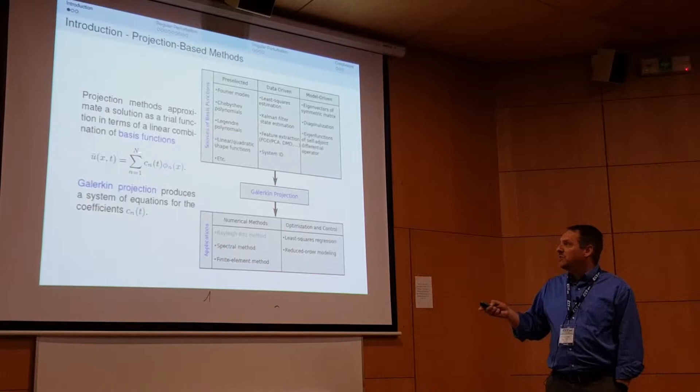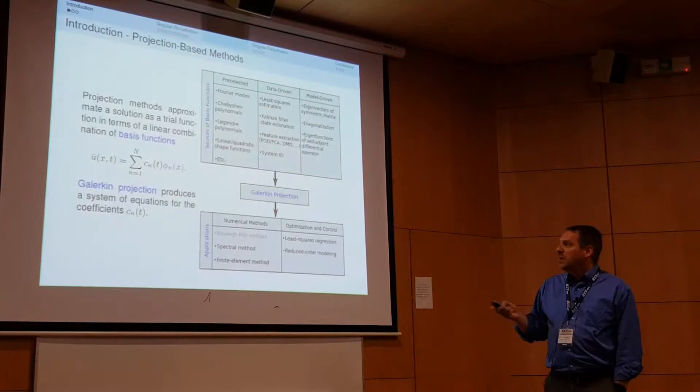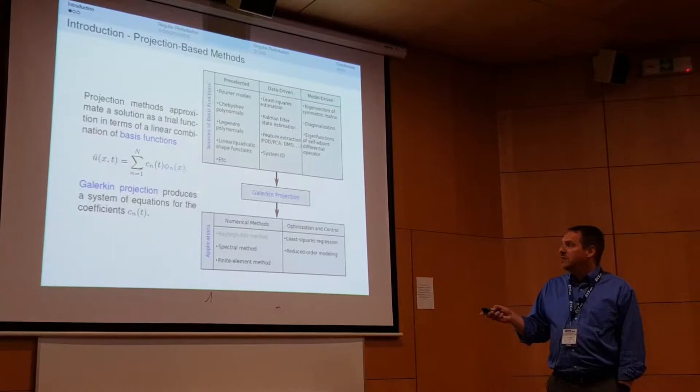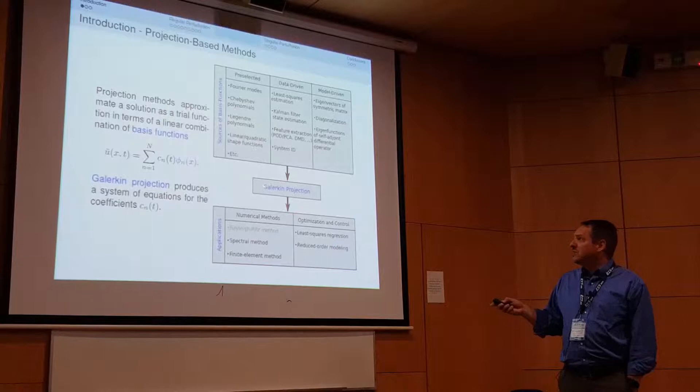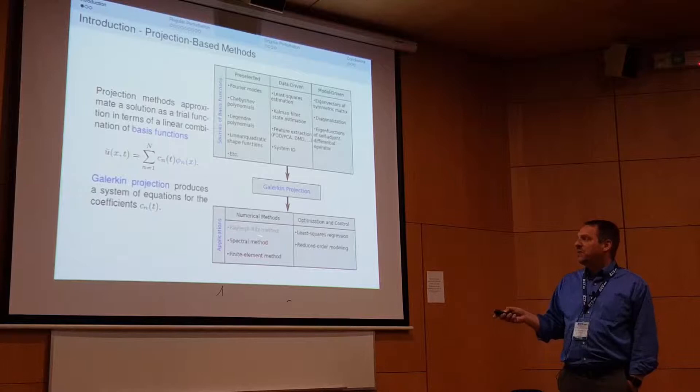There are different ways to select those basis functions, which I'll discuss in a moment. We use Galerkin projection, which is really at the center of all this — taking the trial function with the given basis functions to produce a system of equations for the coefficients. Galerkin projection is central, and the source of the basis functions determines the various applications.